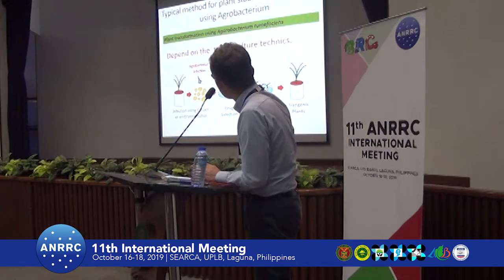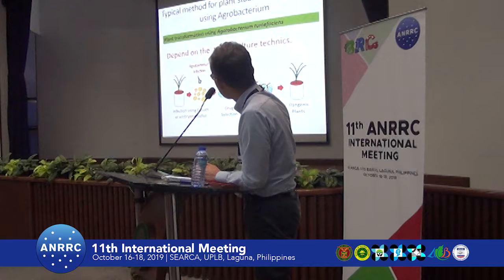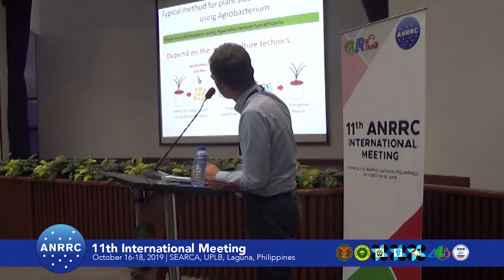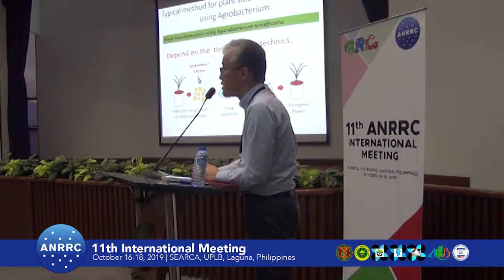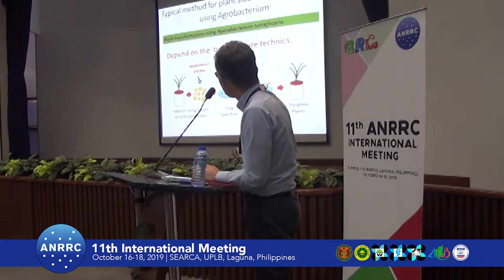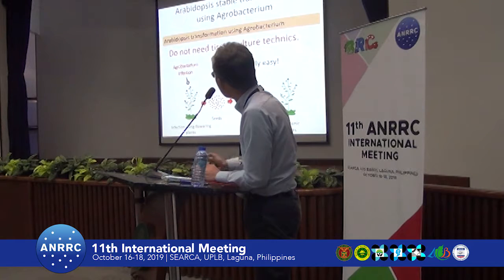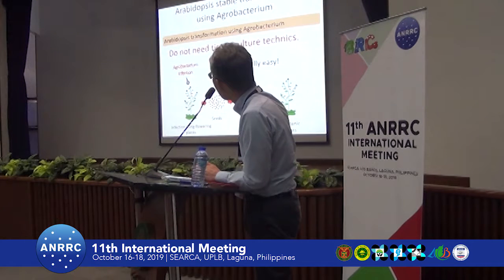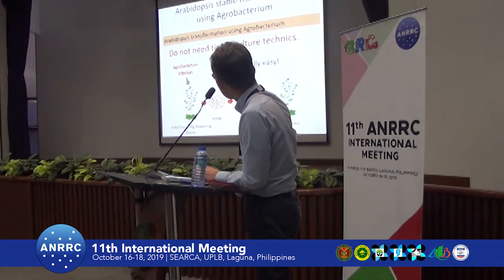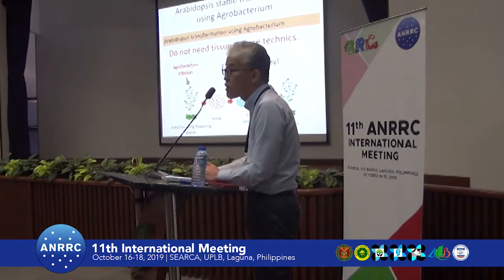Usually we must use tissue culture techniques to make transgenic plants, using embryogenic plants for Agrobacterium infection, and then using tissue culture techniques we produce the transgenic plant. In many cases, tissue culture requires many kinds of skills. But in the Arabidopsis system, we do not need tissue culture technique. We can just use the soil-grown Arabidopsis plant for Agrobacterium infection, get the seeds, and then select the transgenic plant. This is a very good system.